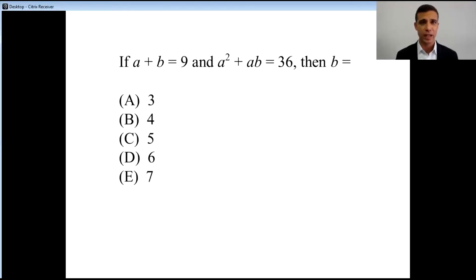If a plus b equals 9 and a squared plus ab equals 36, then what is b equal? Well, when we take a look at b equaling some specific number, it can't be anything we make up. It has to be answer choice A, B, C, D, or E.